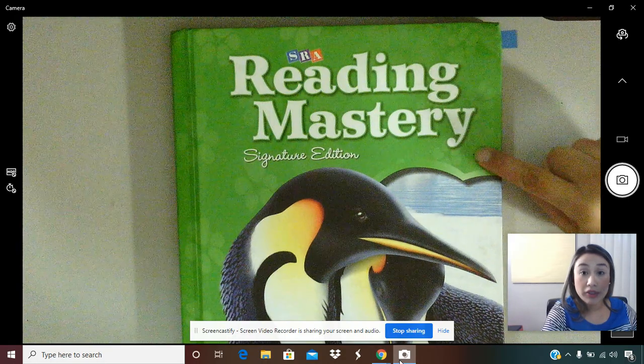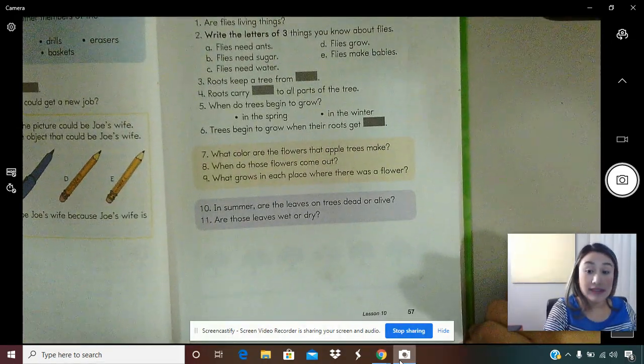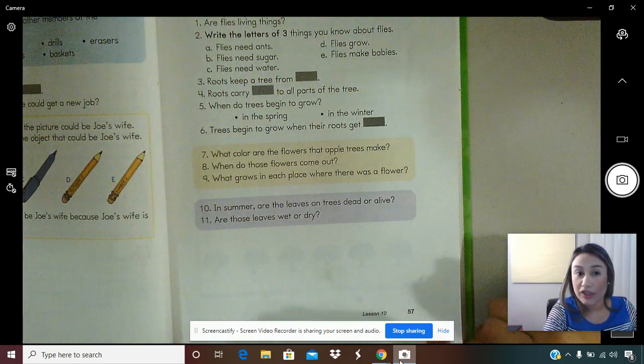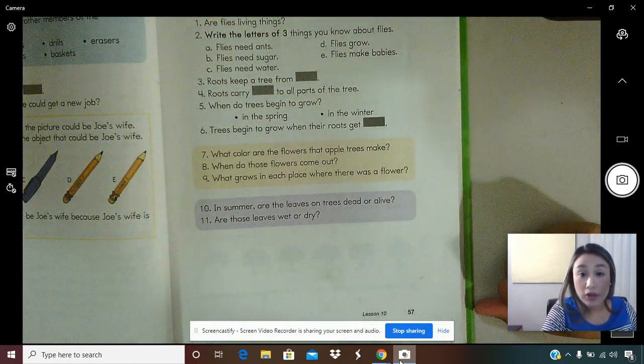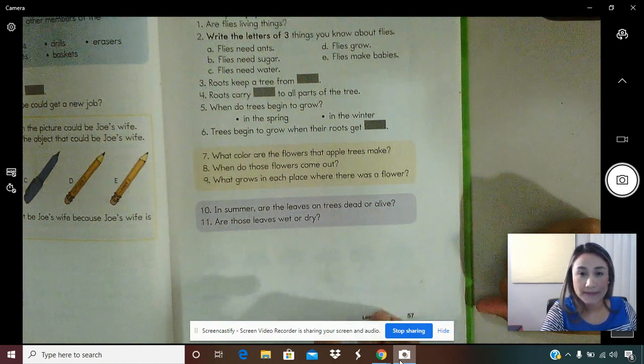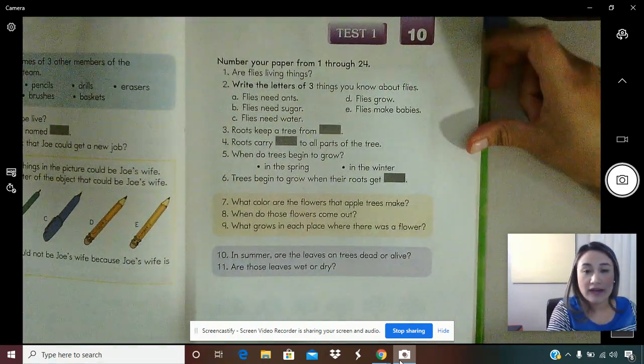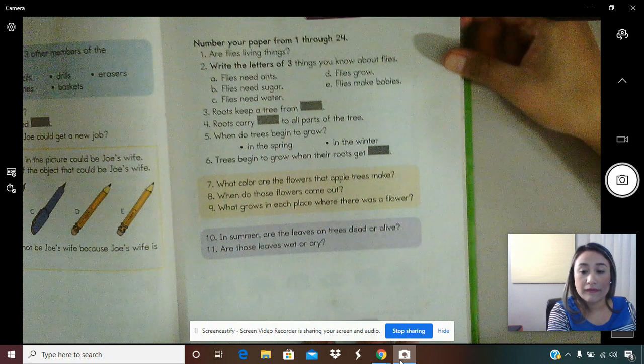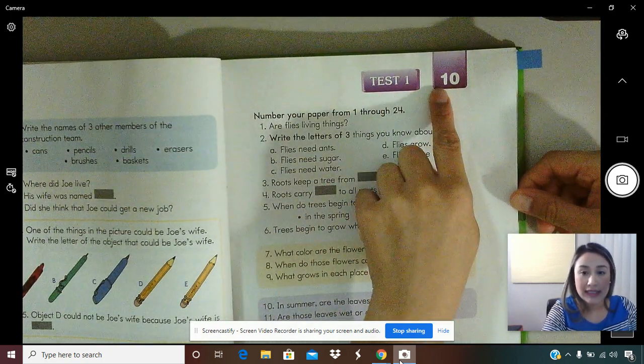So if you open your book to Lesson 10, it's on page 57. What page? Get ready? Yes, 57. So go ahead and open your book to page 57. I'll give you a couple seconds. Okay, so now that you are on page 57, it reads Test 1, Lesson 10.